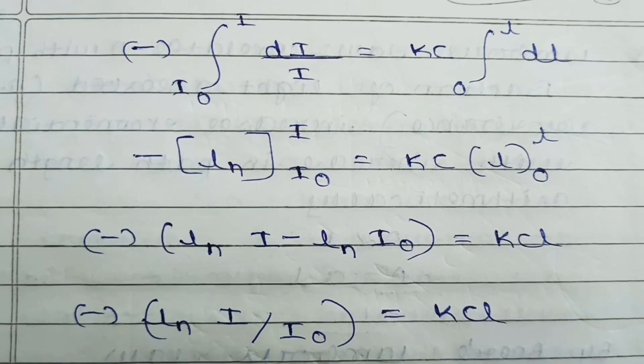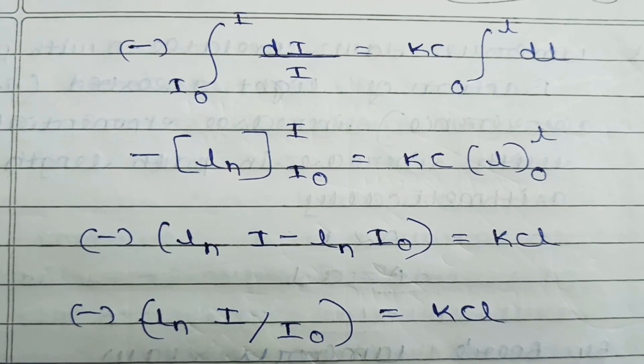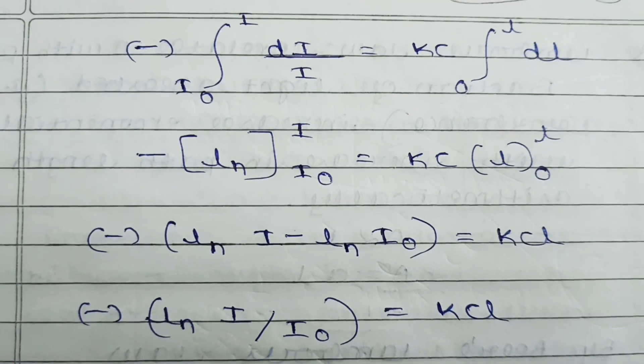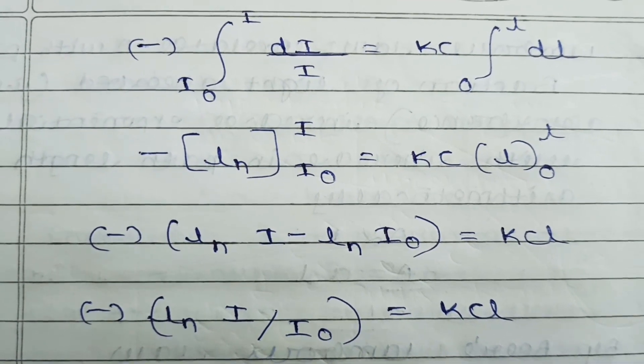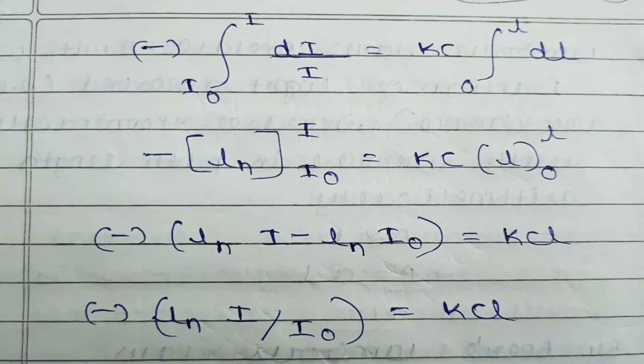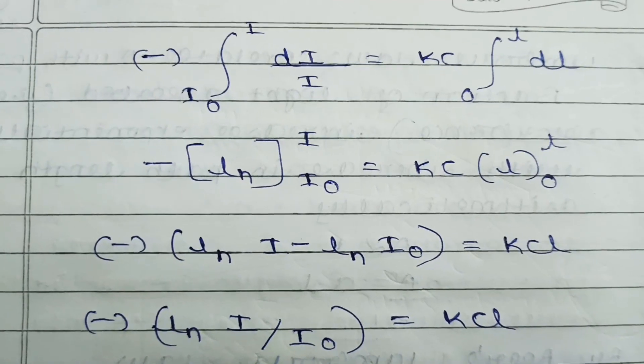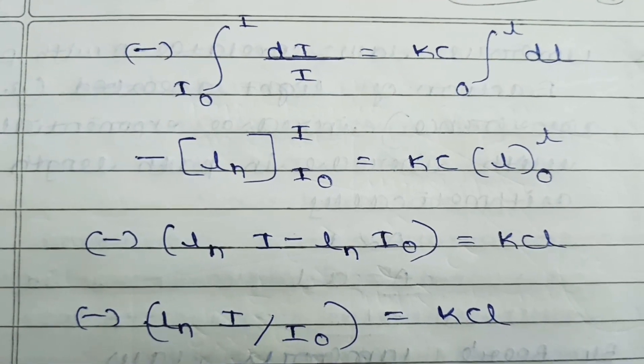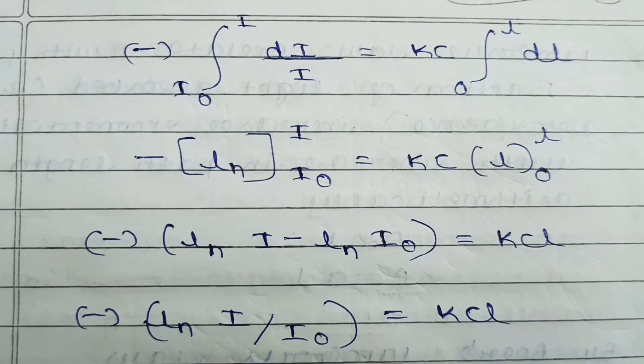Now integrate the equation. Negative sign remains outside. Integrate with respect to limits I₀ to I: DI/I equals K times C constant, which we keep outside, times integration with respect to 0 to L.